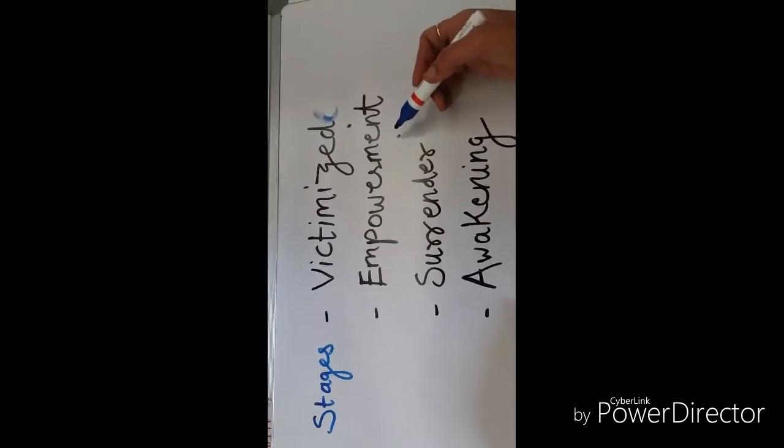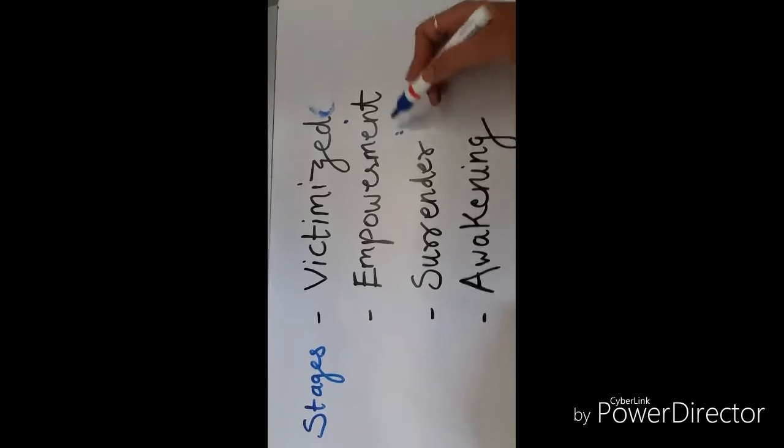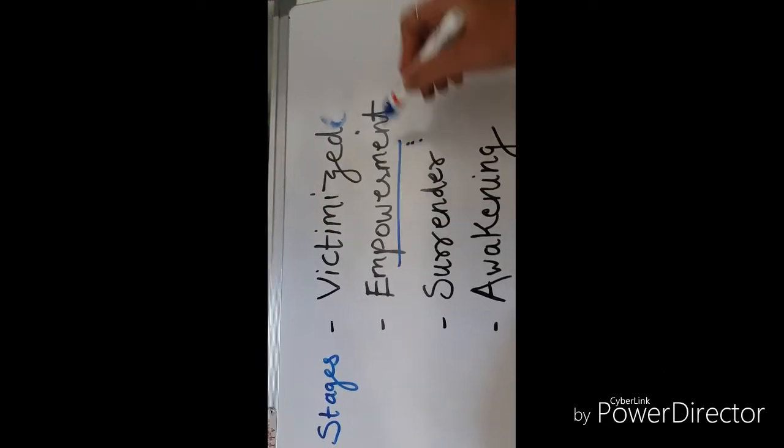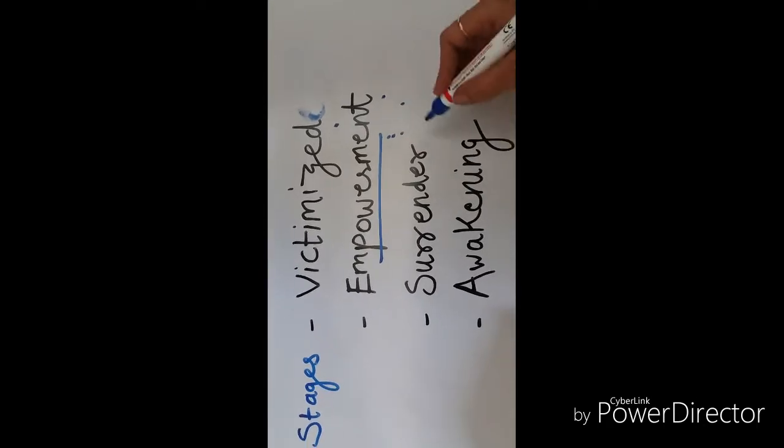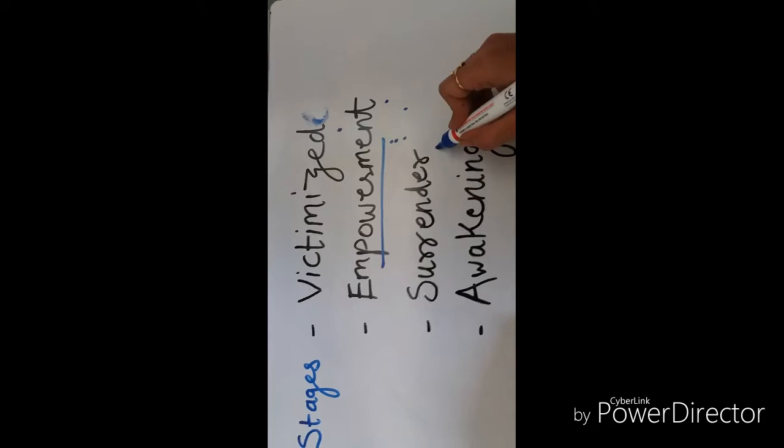Second is the stage of empowerment. When you see a movie like The Secret, you feel that I create my own reality. That is empowering you. So this is the stage of empowerment.